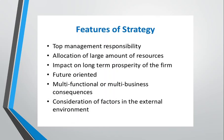Strategy also has multi-functional and multi-business consequences. It doesn't mean that if a strategy fails, it affects only one department or unit — it impacts many functions of an organization and has many business consequences. Additionally, strategy requires consideration of factors in the external environment, such as technology, government policies, and changing legal scenarios. Strategy is never stagnant — it is like an ever-flowing river, a continuous process which businesses have to be very consistent with.